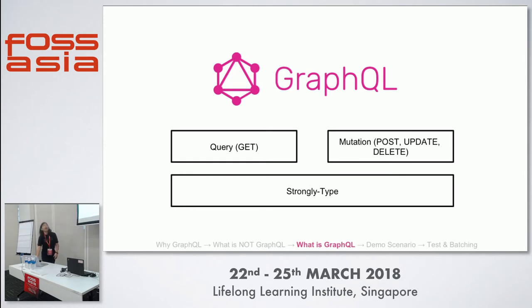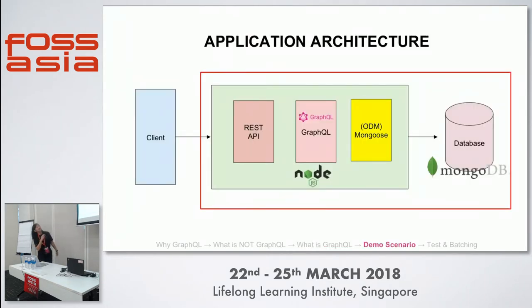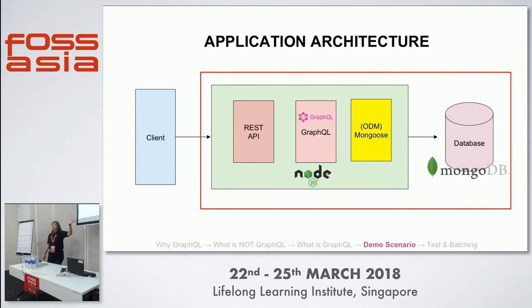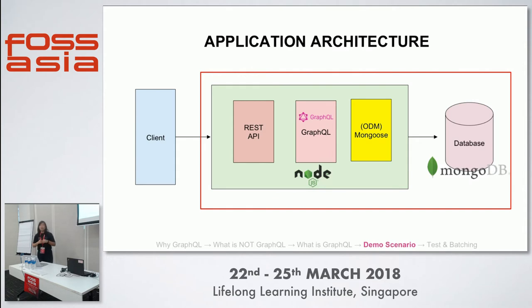Let's look at our application architecture — it's pretty simple. In our Node.js application we'll serve a REST API endpoint, which Express will help with. Then we use GraphQL, and we also have something called an ODM. I'm using Mongoose because I'm using MongoDB as my database. The reason I use an ODM is to ensure that the data I push into the database is consistent, since with ODM you can define the schema of the data you want to push.